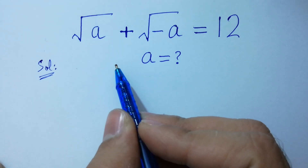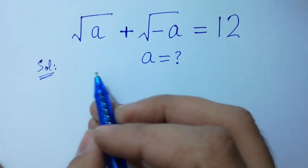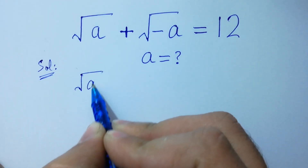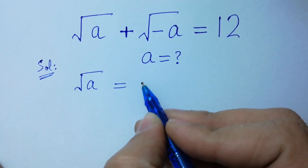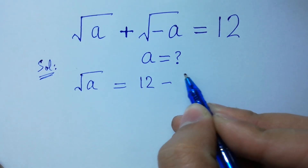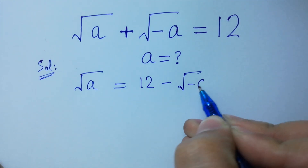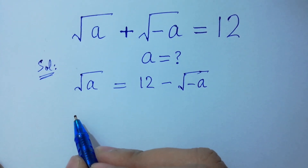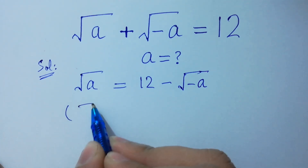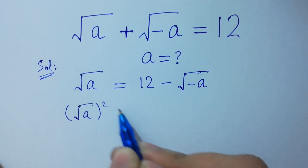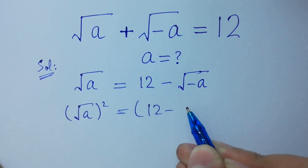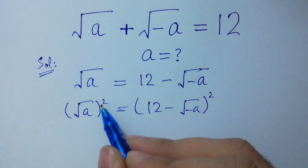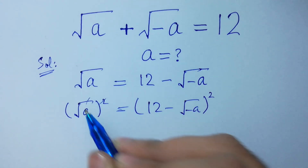This problem can be written as square root of a equal to 12 minus square root of minus a. Take square on both sides: 12 minus square root of minus a, squared. The square will be cancelled from the square root.